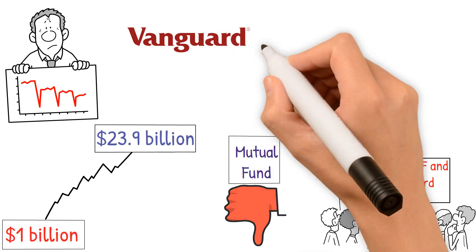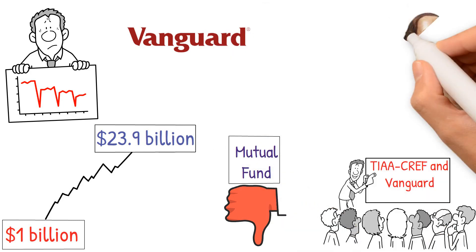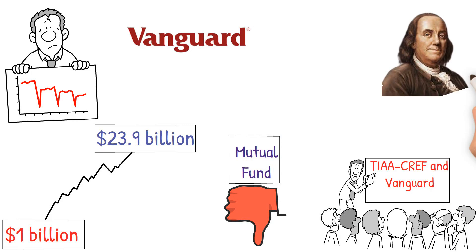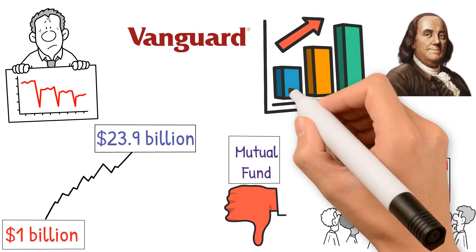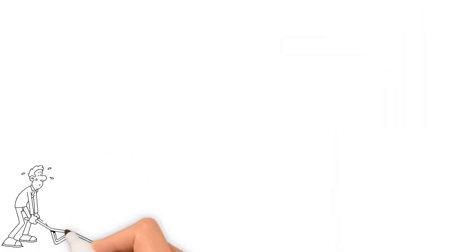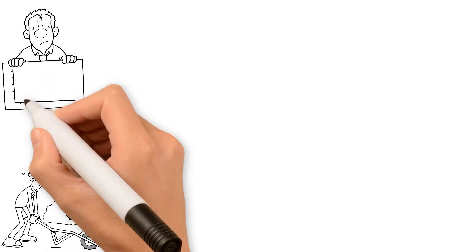John C. Bogle, the visionary behind Vanguard Group, is often equated with the legendary Benjamin Franklin for his inventive spirit. He's lauded for pioneering ETFs and pushing for market returns with minimal fees. He famously noted the dire impact of high fees, illustrating with an example of how they can considerably diminish potential earnings.